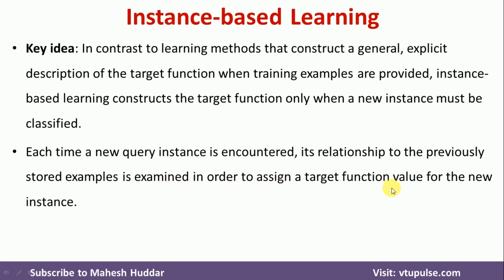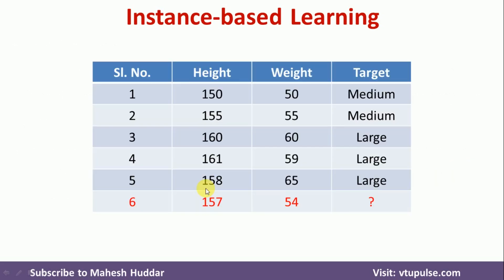I will take a simple example to illustrate this concept. Let us say we have been given five instances with height and weight as the attributes, and the target is the target function. In this case, there are two classes: one is medium and another one is large.